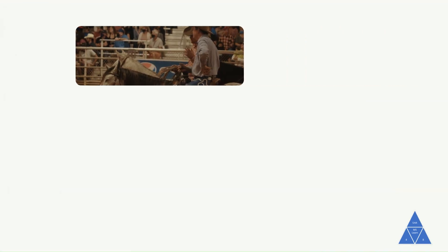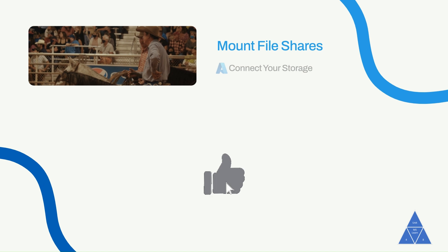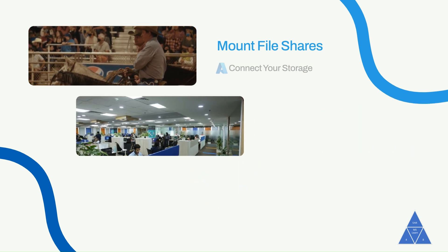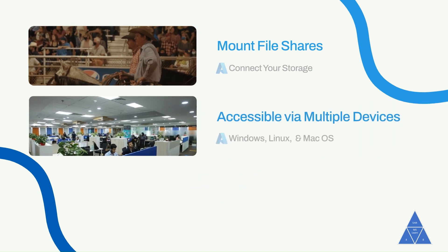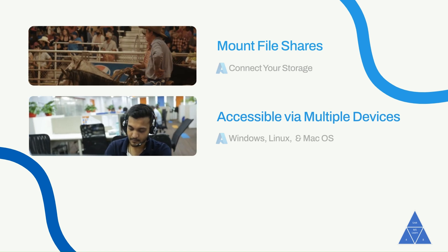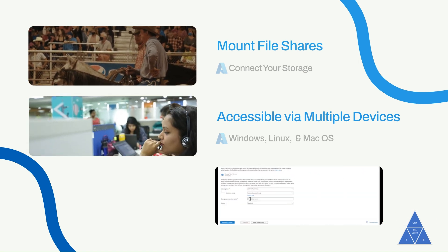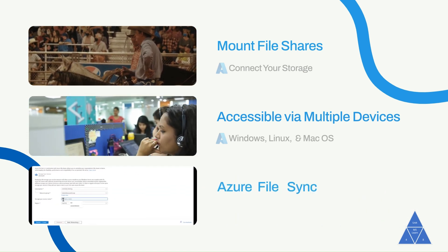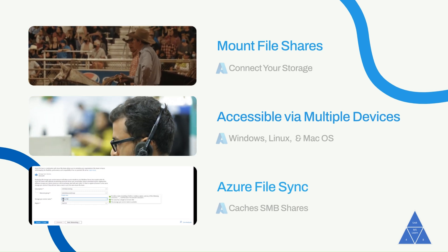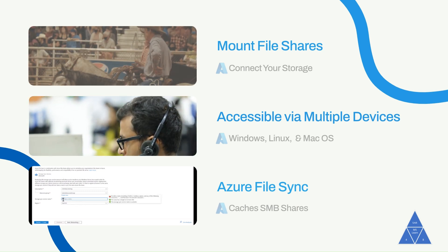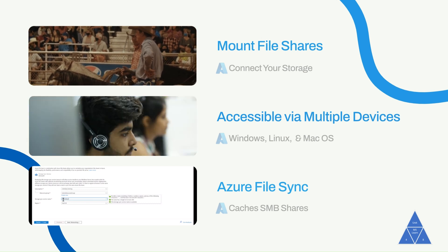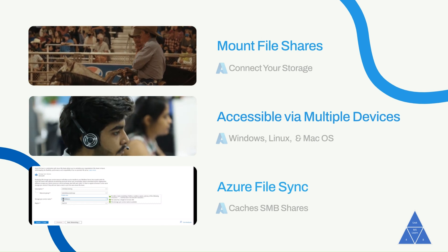Azure File Shares can be mounted — which is a fancy way of saying connected — by cloud or on-premise deployments. SMB Azure File Shares are accessible from Windows, Linux, and macOS clients. NFS Azure File Shares are only accessible from Linux or macOS clients. To speed up access, Azure File Sync caches SMB file shares on Windows servers.